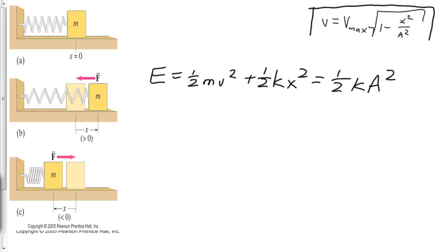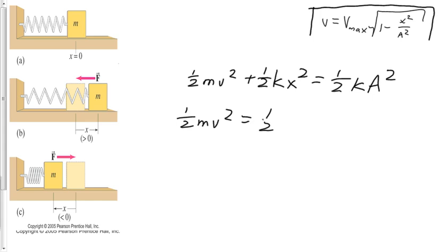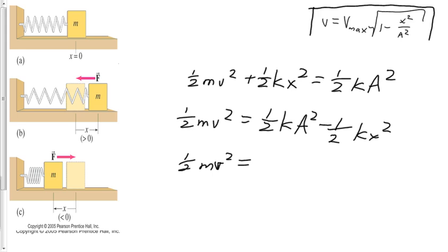What I'm going to do is solve for v squared. So I'll rewrite this: ½mv² equals ½kA² minus ½kx². From there we can factor out ½k from the right side, so ½mv² equals ½k times (A² minus x²).